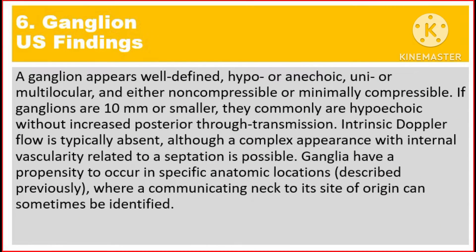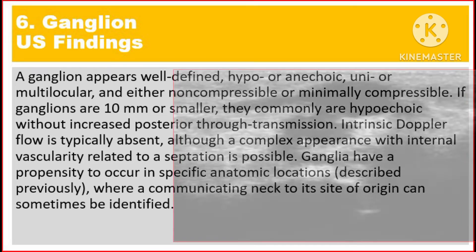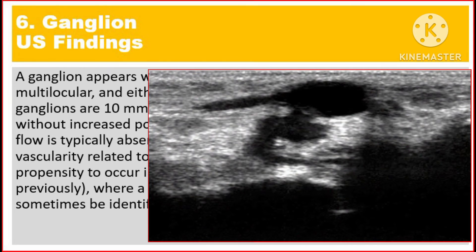Ultrasound findings: A ganglion appears well-defined, hypo- or anechoic, uni- or multilocular, and either non-compressible or minimally compressible.